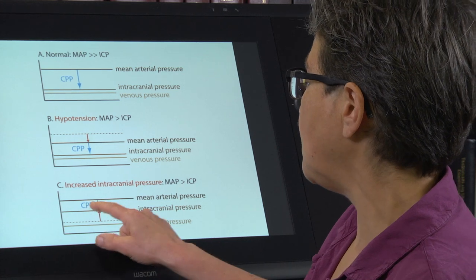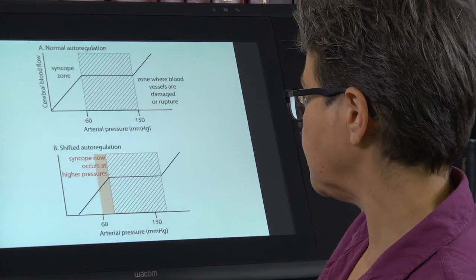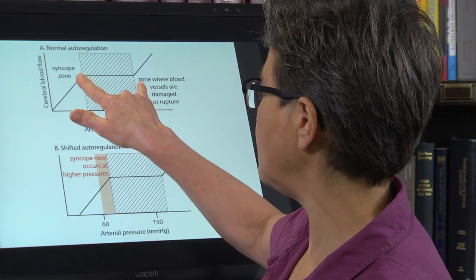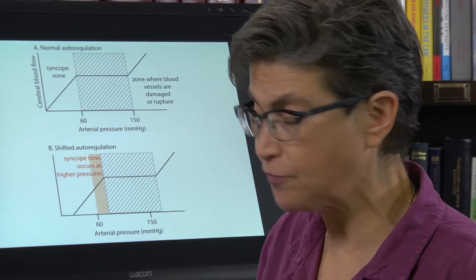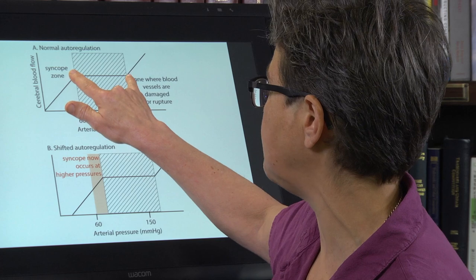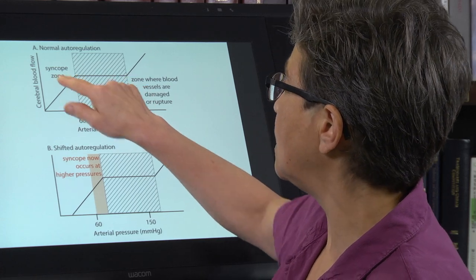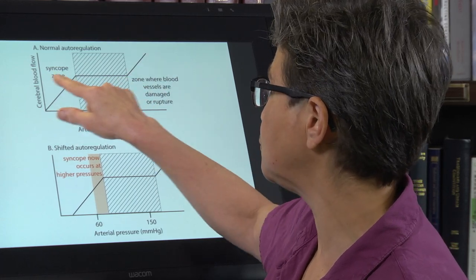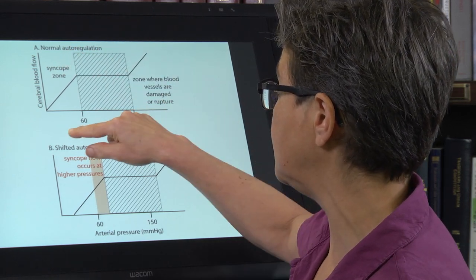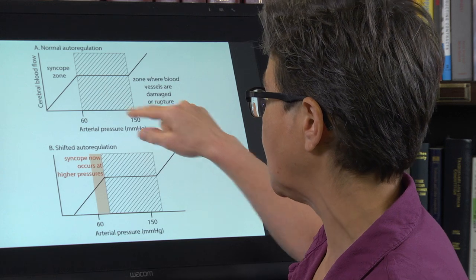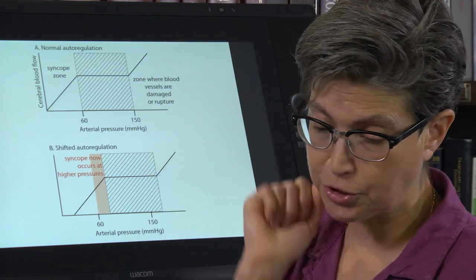We worry so much about cerebral perfusion pressure that we have a very dedicated pair of systems that allows us to maintain cerebral blood flow, cerebral perfusion pressure, within a steady range between a lot of different values of arterial pressure, and this is called autoregulation.